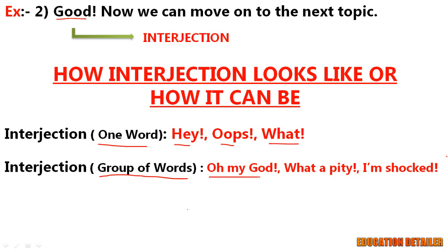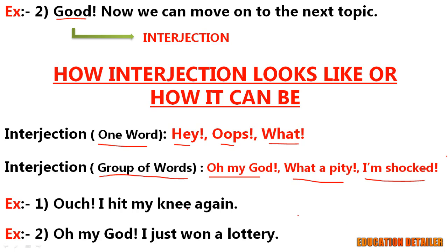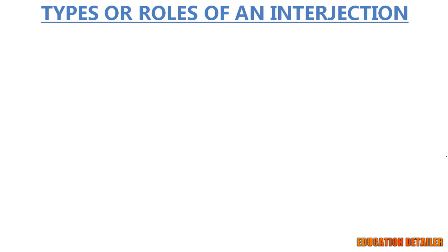Multi-word interjection examples include 'oh my god', 'what a pity', 'I'm shocked', etc. For example: 'Ouch, I hit my knee again' — here 'ouch' is a one-word interjection. But in 'Oh my god, I just won a lottery!' the interjection is a group of words: 'oh my god'. Let's move on to the types or roles of interjections.